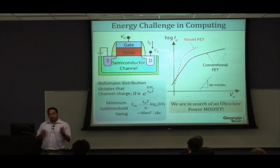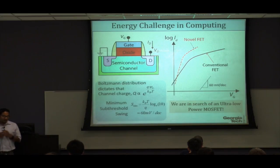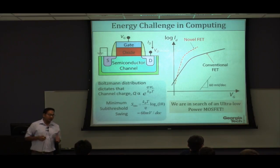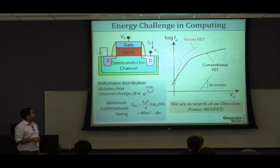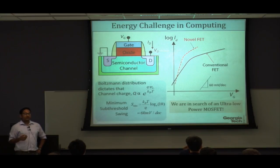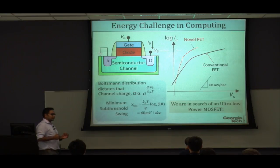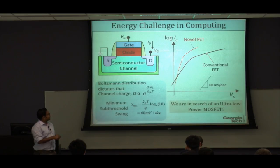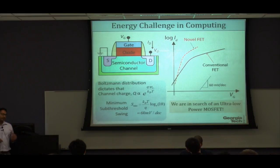Going forward, if we take a conventional transistor and do whatever engineering we can, we cannot go below the 60 mV/decade subthreshold swing limit. The consensus is that we need to reinvent the transistor — incorporate new physics into its operation — such that we can reduce the subthreshold swing below 60 mV/decade and get a device with much sharper switching characteristics. That's the basic thing the industry is looking for.